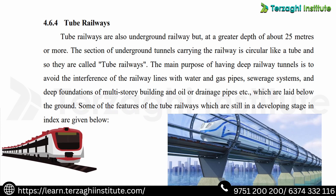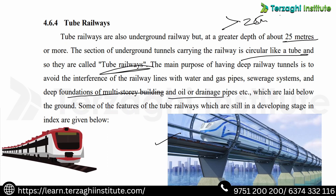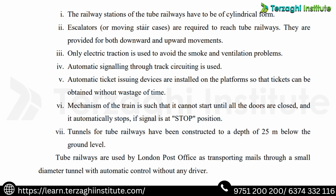Next is Tube Railways. Tube railways run in underground tunnels at a greater depth of about 25 meters or more. The tunnel section is circular — a circular tube. The main challenge is avoiding interference with gas pipelines, sewerage systems, and deep foundations of multi-story buildings. Railway stations are in cylindrical form.